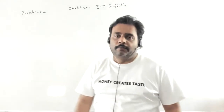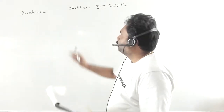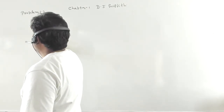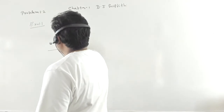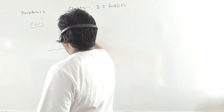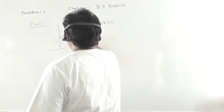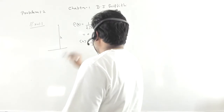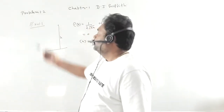Let's solve problem 1.2 from 'Introduction to Quantum Mechanics' by David J. Griffiths. This problem is an extension of Example 1.1, where a rock is dropped under gravity from a cliff of height h. In that example, we calculated the probability density as 1/(2√(hx)) for x between 0 and h, and the expectation value of x as h/3.